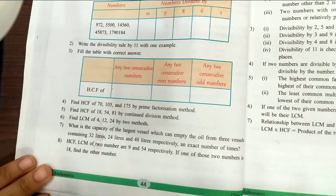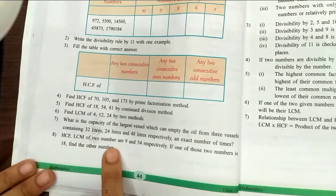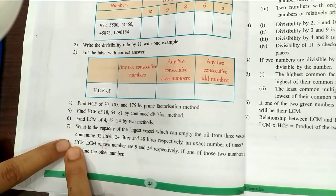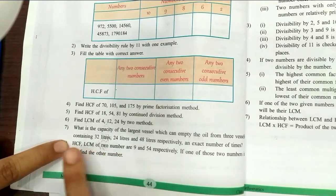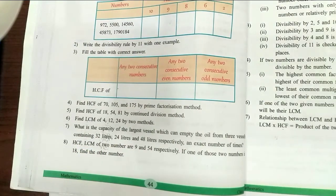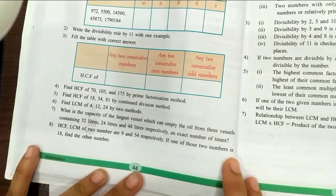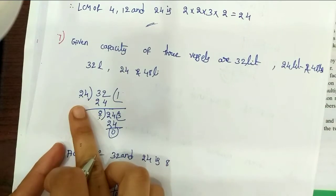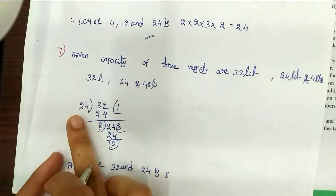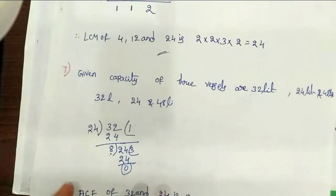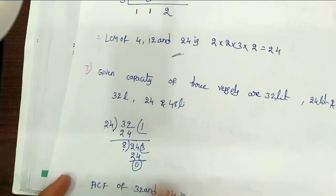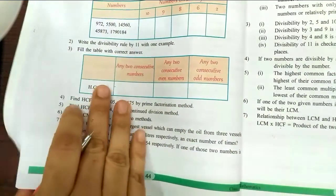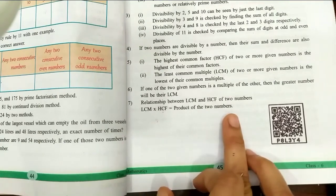That's it. And the next last problem. HCF and LCM of two numbers are 9 and 54 respectively. If one of the two numbers is 18, find the other number. We will write the formula: LCM into HCF equals product of two numbers.